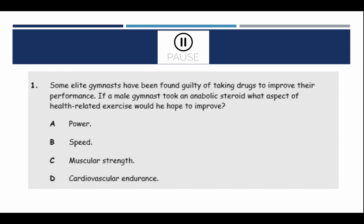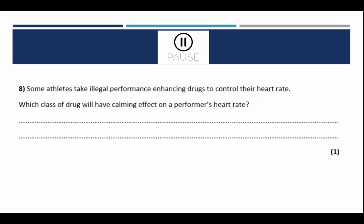Pause the video and answer the following questions. Some elite gymnasts have been found guilty of taking drugs to improve their performance. If a male gymnast took an anabolic steroid, which aspect of their health-related exercise would they improve? Power, speed, muscular strength, or cardiovascular endurance? Some athletes take illegal performance-enhancing drugs to control their heart rate. Which class of drug will have a calming effect on a performer's heart rate?